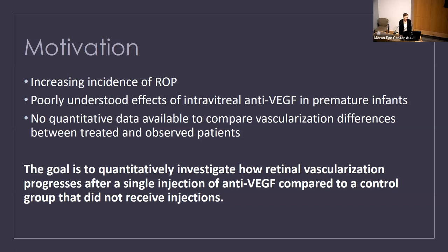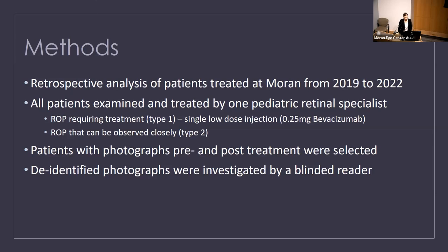This is a retrospective analysis of patients treated at Moran from 2019 to 2021. All patients were examined and treated by the same pediatric retinal specialist, Dr. Hartnett. We included patients with ROP Type 1 that required treatment who received a single low dose of intravitreal bevacizumab. The control group was closely observed Type 2 ROP patients. All patients needed to have photographs pre- and post-treatment. I was a blinded reader, receiving de-identified photos to investigate retinal vasculature.